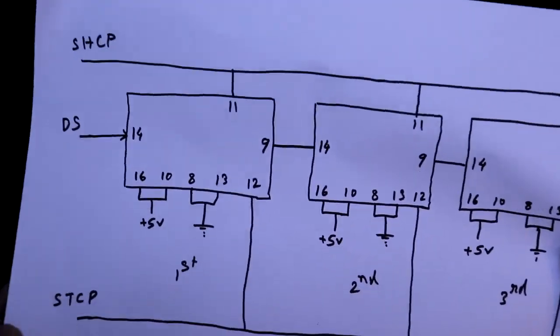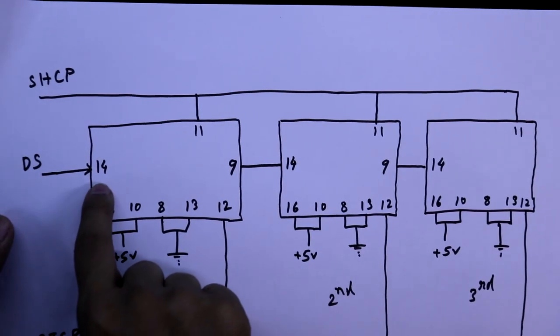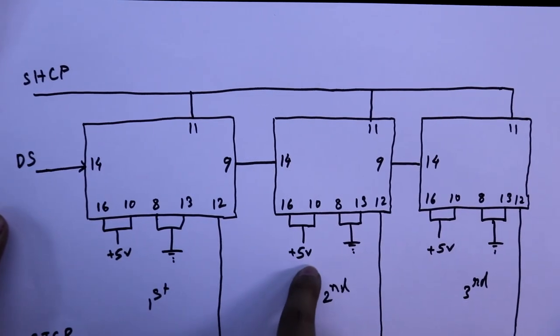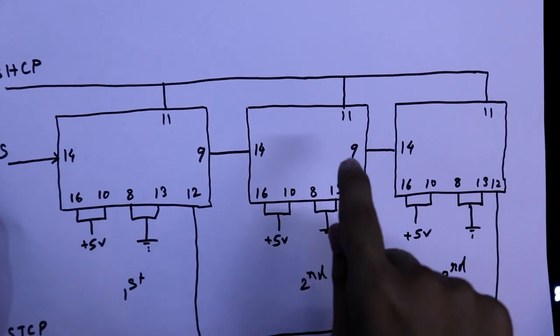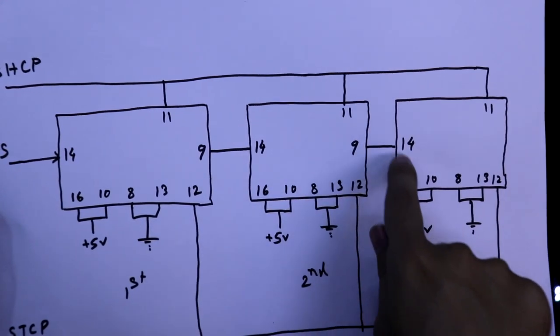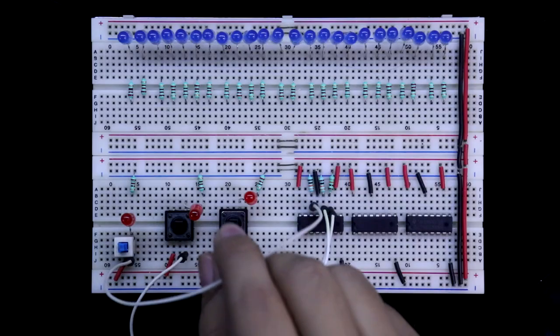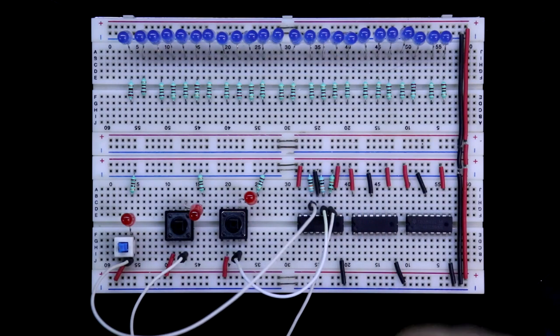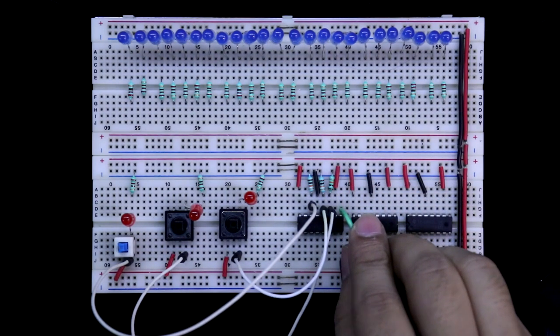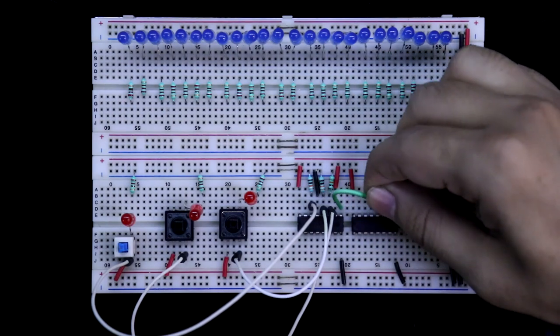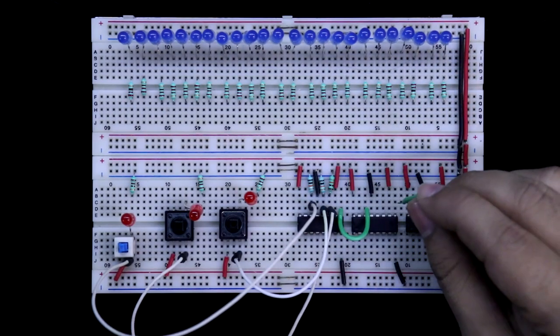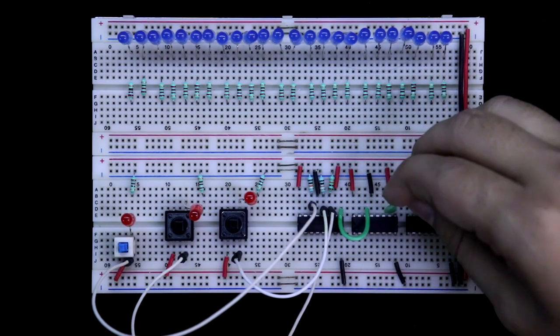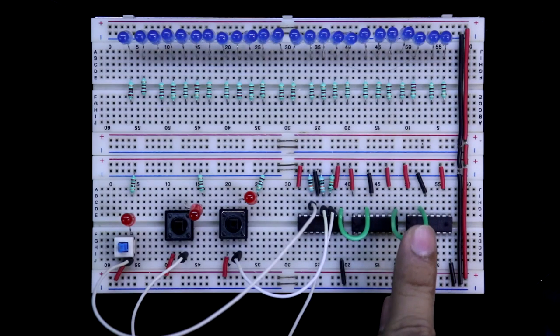Now see the next connection. Pin number 14 is data in. Pin number 9 of first IC is connected to the pin number 14 of second IC. And like this, pin number 9 of second IC is connected to the pin number 14 of third IC. Here we are providing data to the first IC. Here it is pin number 9 and it is connected to the pin number 14. Here it is pin number 9. And it is connected to the pin number 14.